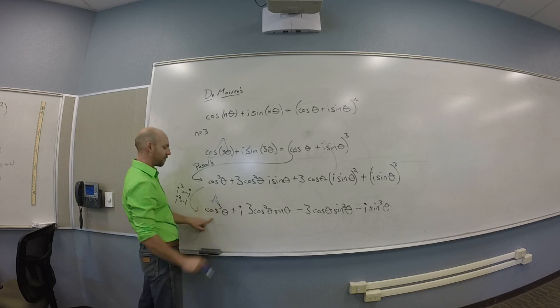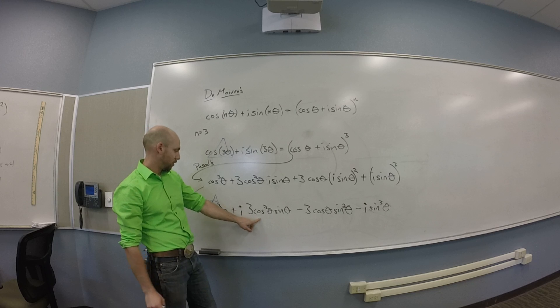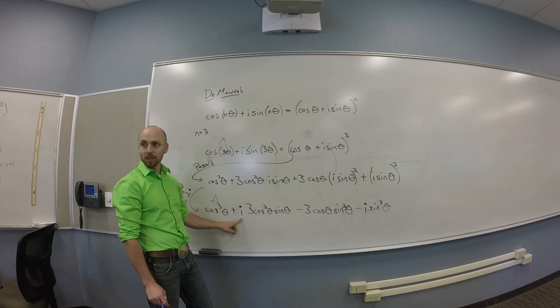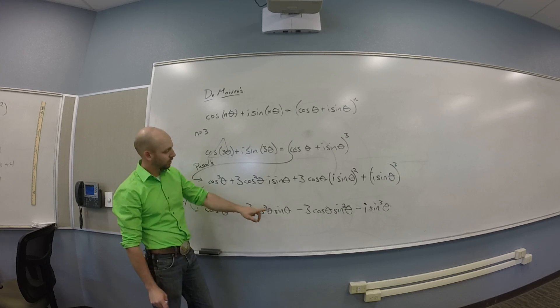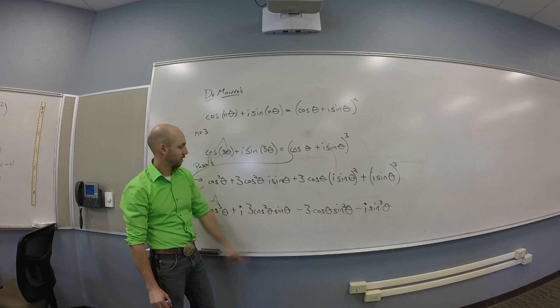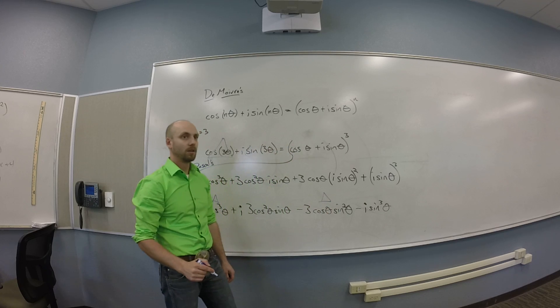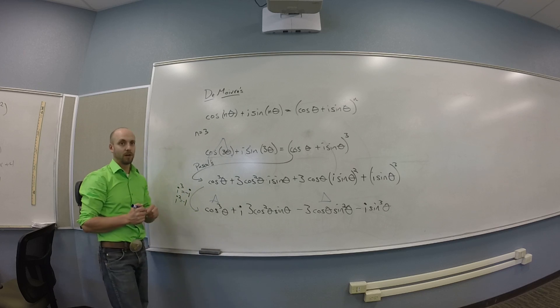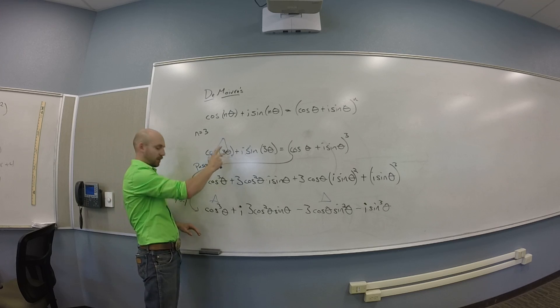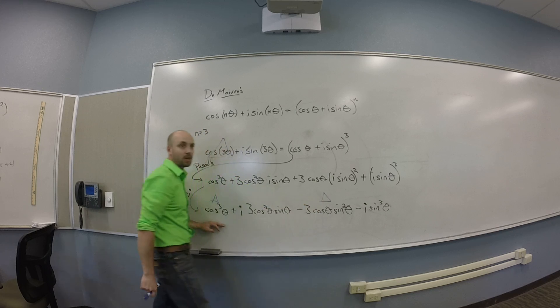Cosine cubed doesn't have an i, so that gets a triangle. This term with cosine squared sine has an i, so that doesn't go with cosine of 3 theta. What else doesn't have an i? Yeah, the negative 3 cosine theta sine squared. You guys with me? So that's the triple angle formula for cosine: cosine of 3 theta is cosine cubed theta minus 3 cosine theta sine squared theta.